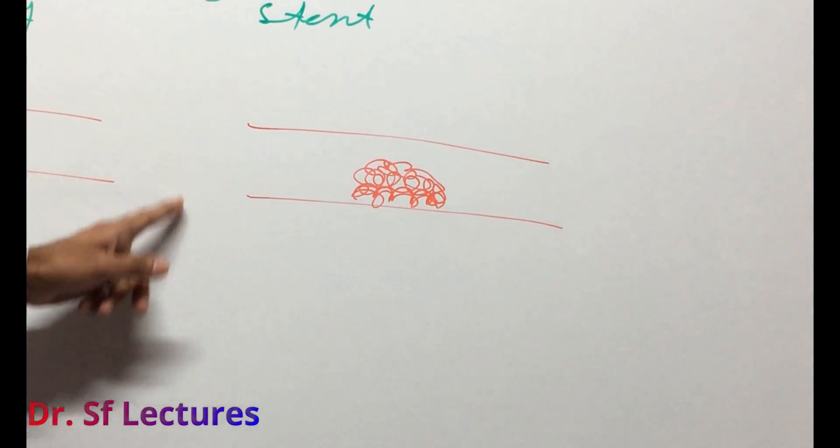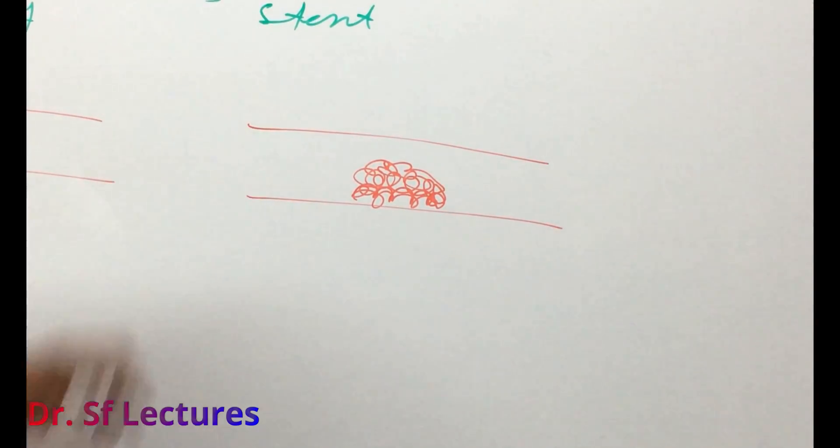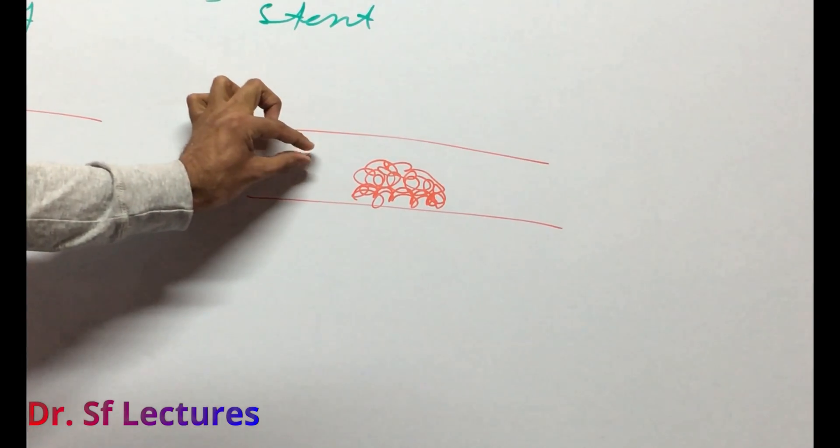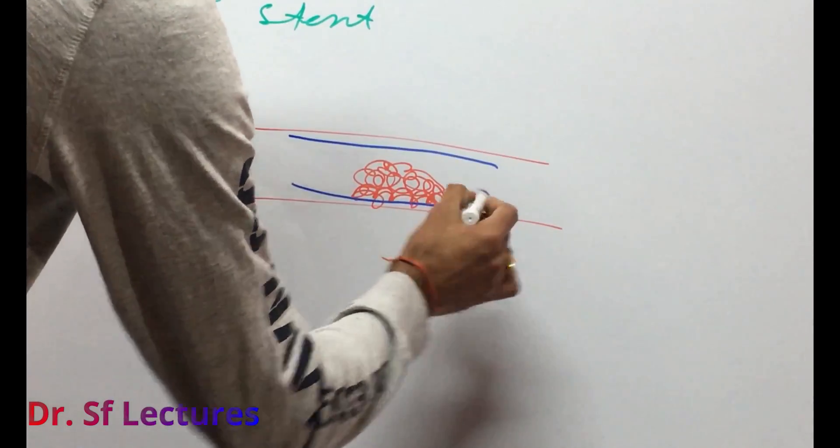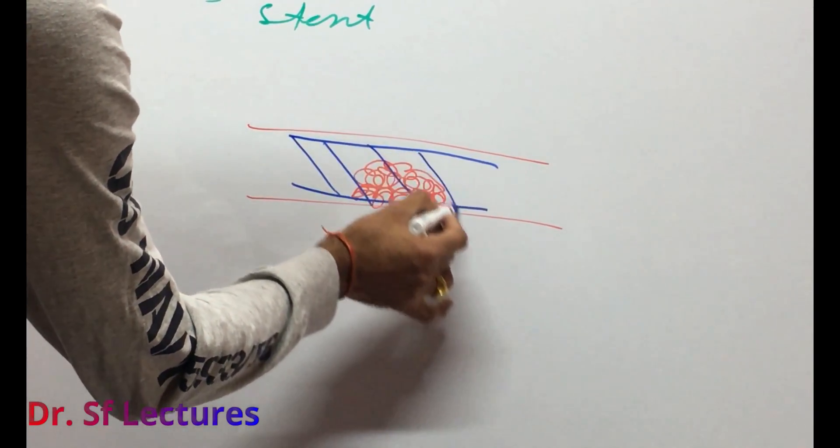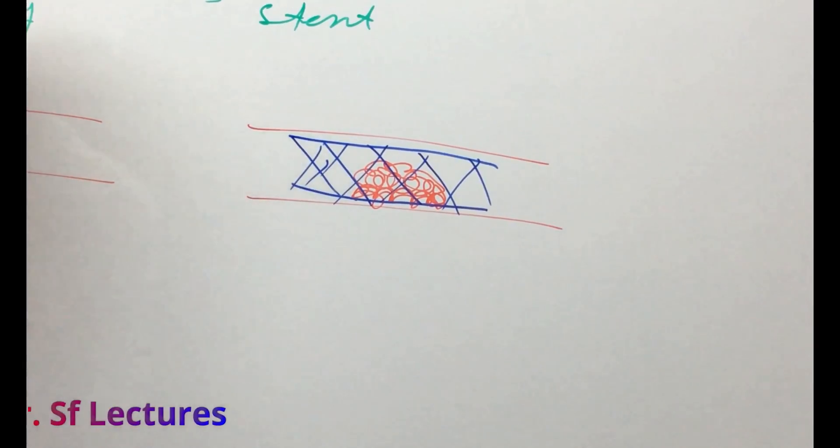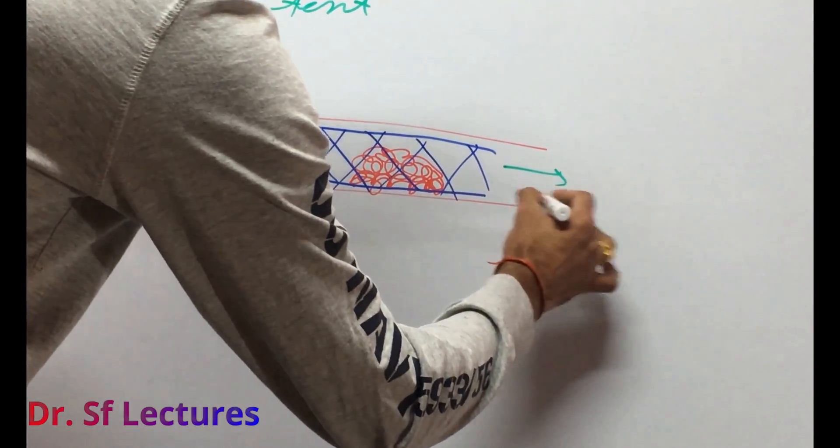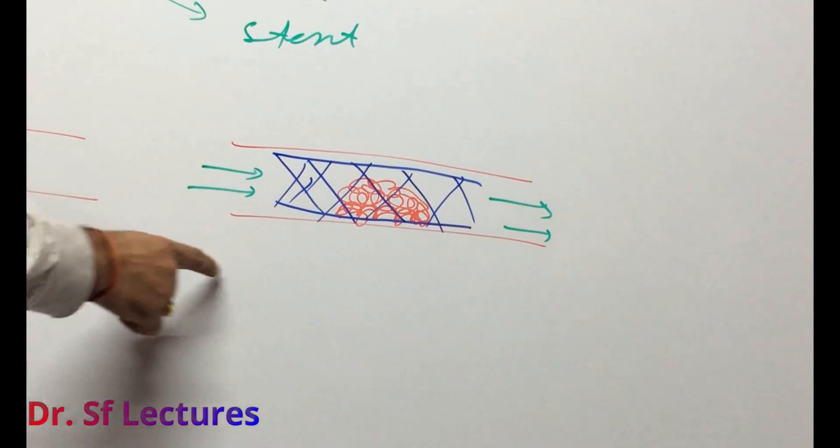Through a special catheter, surgeon will put stent in the coronary artery and the stent will widen the coronary artery. This is the stent put in the coronary artery, and blood supply will continue to the tissue.